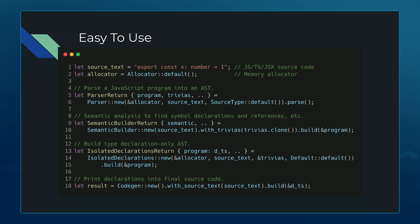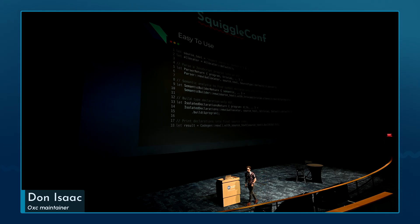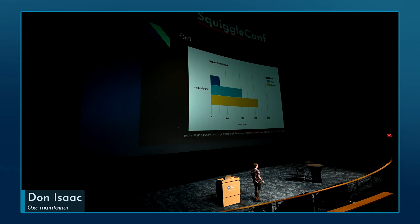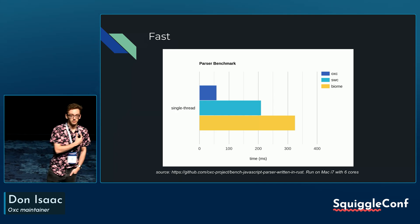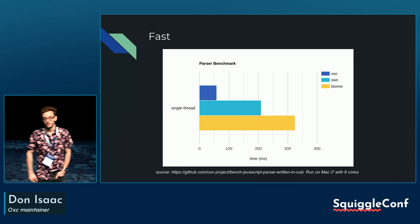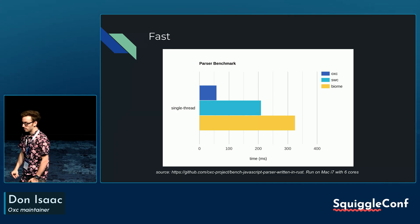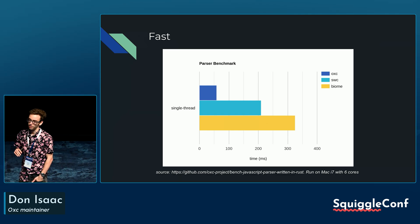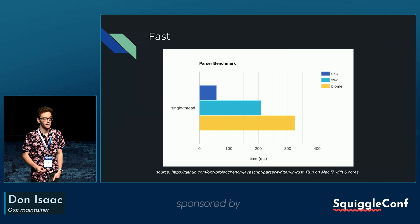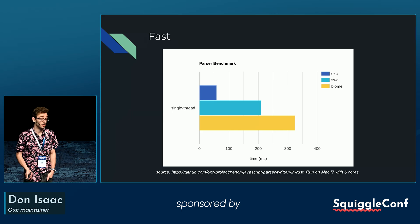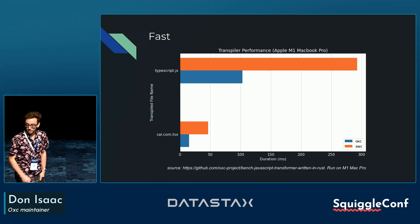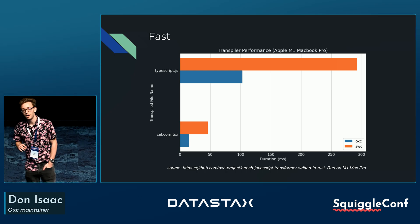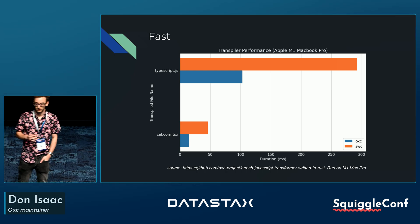But the main reason people are using our tools is they're just super fast. The benchmarks are all available on GitHub — you can run them yourself. Our parser is about three times faster than SWC's and five times faster than Biome's when run on a single thread. The transpiler is about three to four times faster.